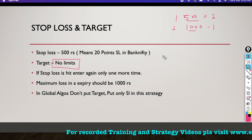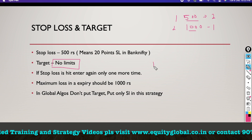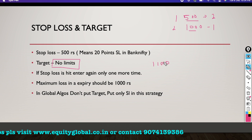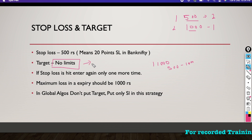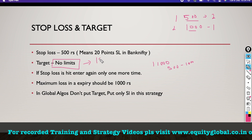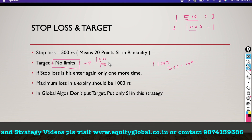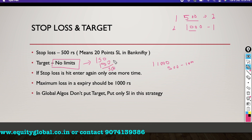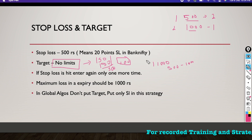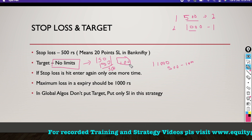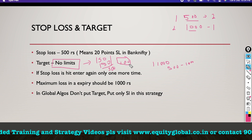The target is optional — you don't have to set one. But as an example: if your stop loss is 1000 and you want a 1:1 ratio, set 1000 as target; with a 500 stop loss you can set 1000 for a 1:2 ratio. In a short straddle, if the call premium is 150 and put premium is 150, you collect 300 points total. You don't need all 300 — even 100 points is easily achievable by 1:30. With a 500 stop loss, you could set 2000 rupees as target.